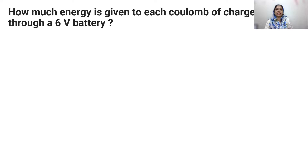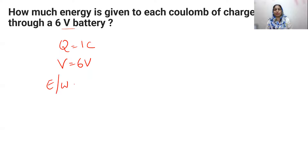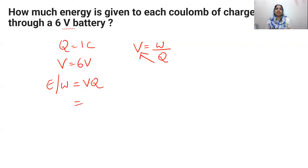How much energy is given to each coulomb of charge passing through a 6 volt battery? The potential difference is 6 volts. Energy and work are mathematically equal. Using W equals V into Q, substituting V equals 6 and Q equals 1 coulomb, we get 6 into 1 equals 6. The unit of energy is joule, so the answer is 6 joules.